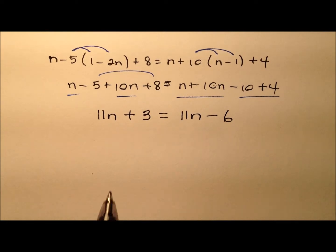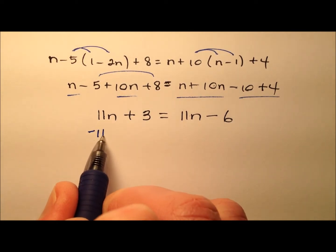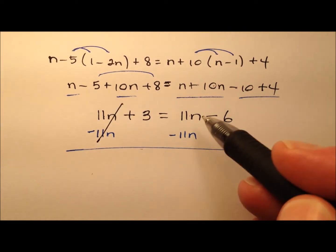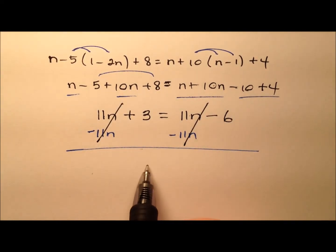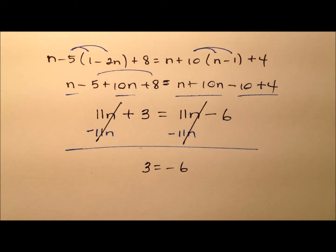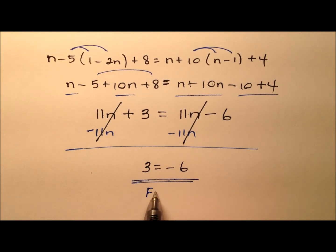Something interesting has arisen here. It looks like we have an 11n on both sides of our equation. So if we subtract 11n from both sides using the subtraction property of equality, the 11n cancels from the left and the 11n cancels from the right, and what we're left with is simply a numeric statement. Here is one of the issues: if the goal of solving equations is to isolate the variable, well, there is no variable — all the variables canceled. 3 equals negative 6. That's false.